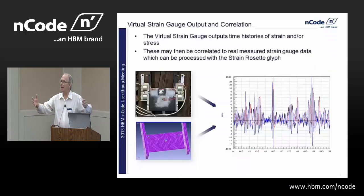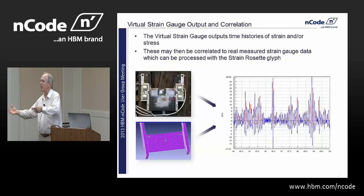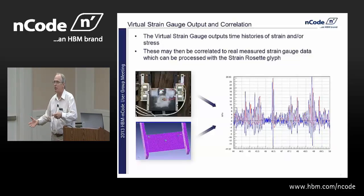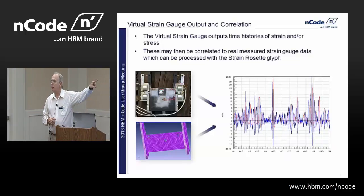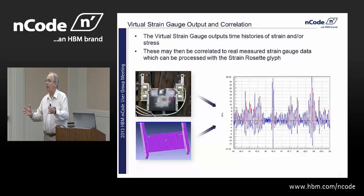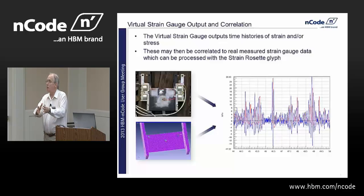The idea of the Virtual Strain Gauge was there largely for correlation and detailed information. We're going to use it to actually come up with a transfer function to describe how loads affect those gauges.